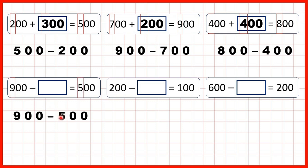So we can still use subtraction to find our missing number. 900 minus 500 is 400. So that's our missing number, and that makes sense because 9 minus 4 is 5.